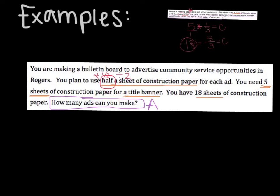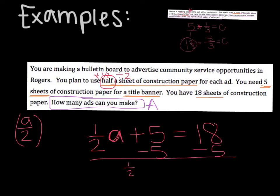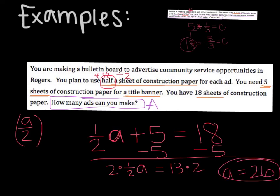So we are going to use that to create an equation. We have half the sheets of construction paper, so I'm going to say one-half — and that's for each ad, so that's going to be one-half of A. You could also say A divided by two. Then you need five sheets for the title banner, so you need to include five more sheets. And you have 18 sheets of paper — that's your total, your solution side. So now I can solve for A: subtract five on both sides — one-half A equals 13. Multiply by two on both sides — A equals 26. So 26 ads can be made.